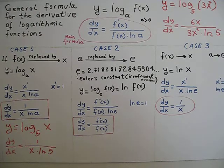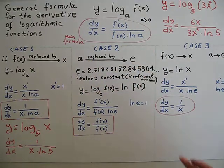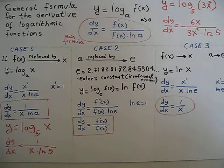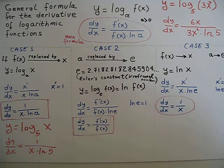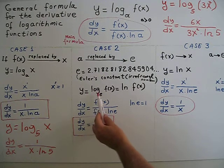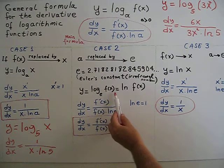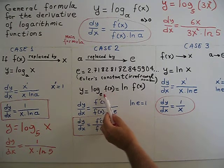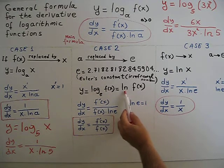In case 2, if a is replaced by e, as you know, e is Euler's constant. This is an irrational number equal to 2.71828... and keeps going. In this case, y equals log base e of f of x.